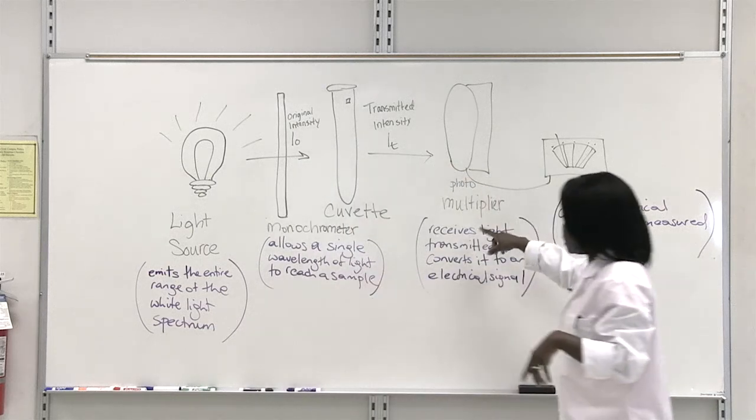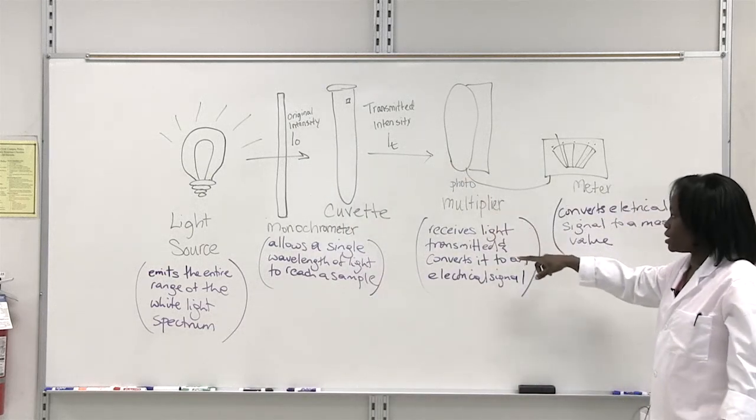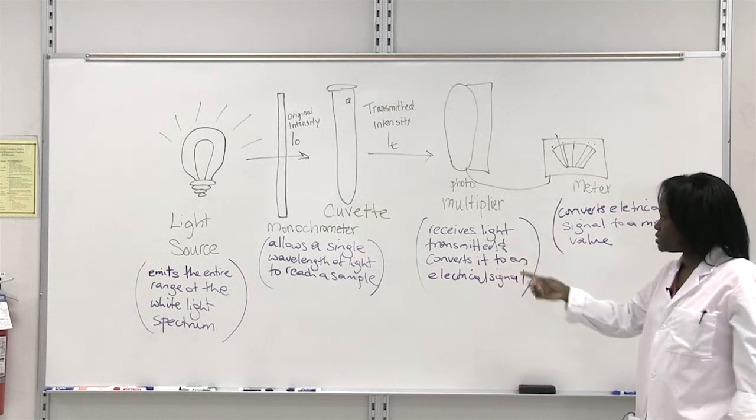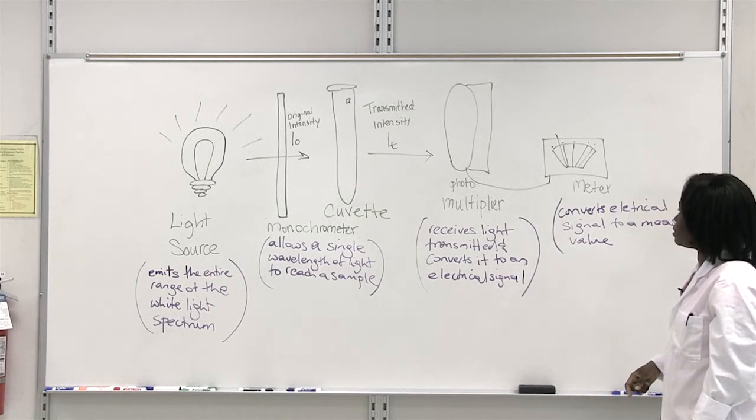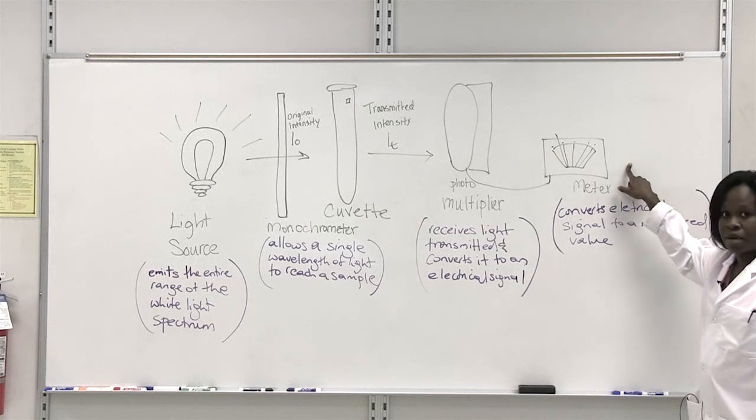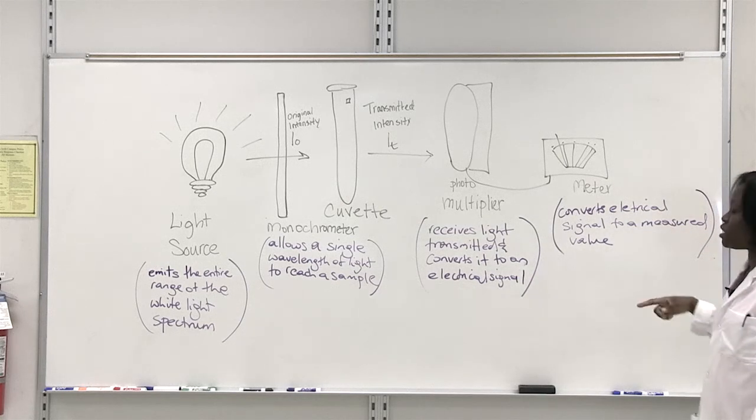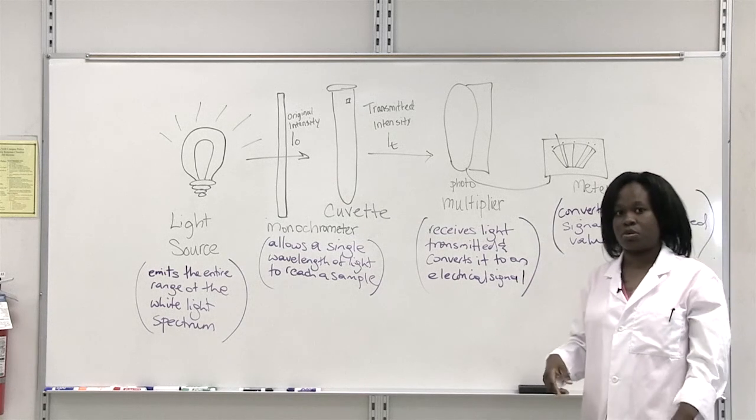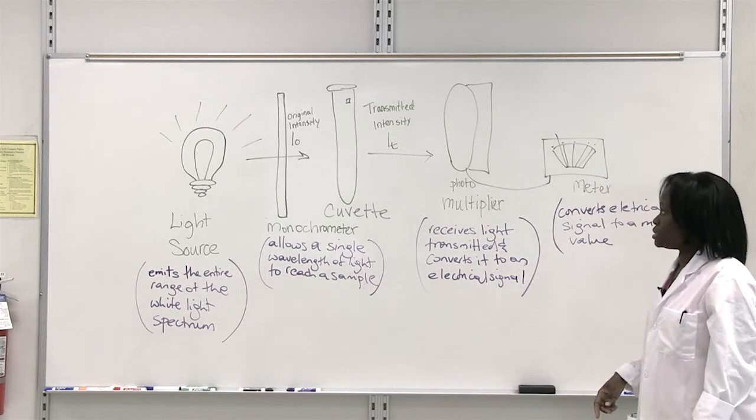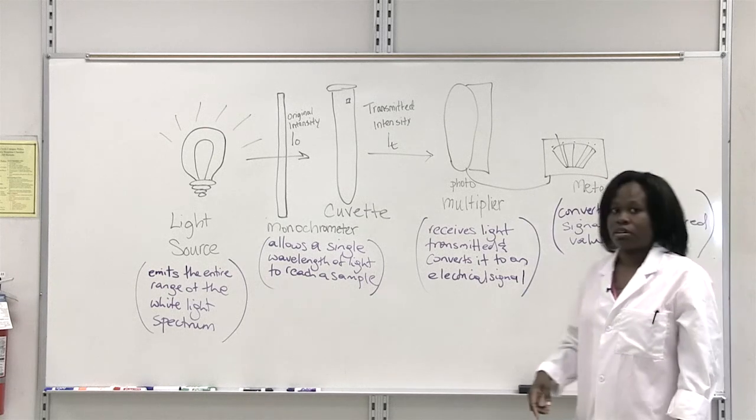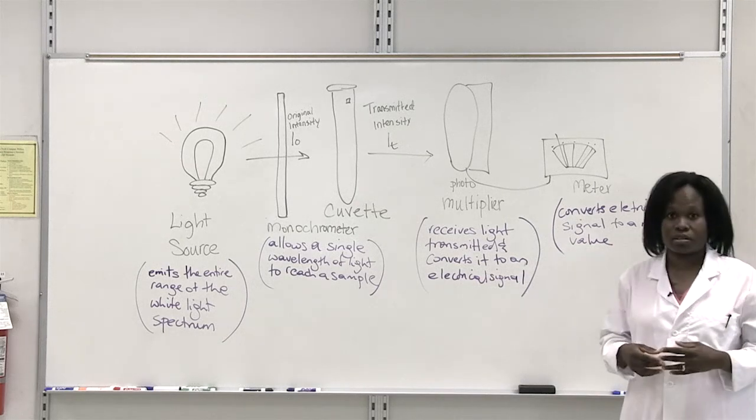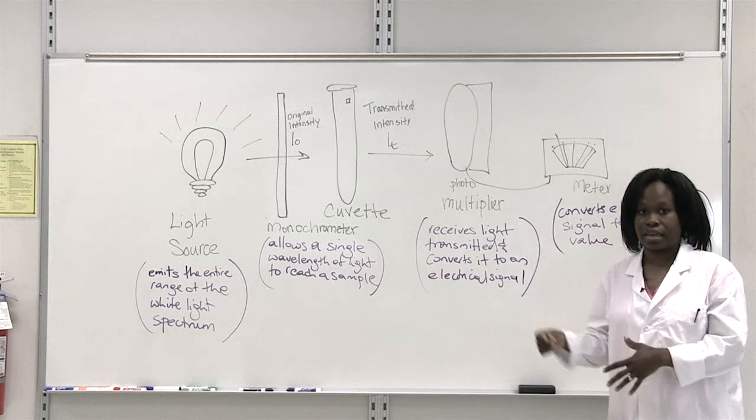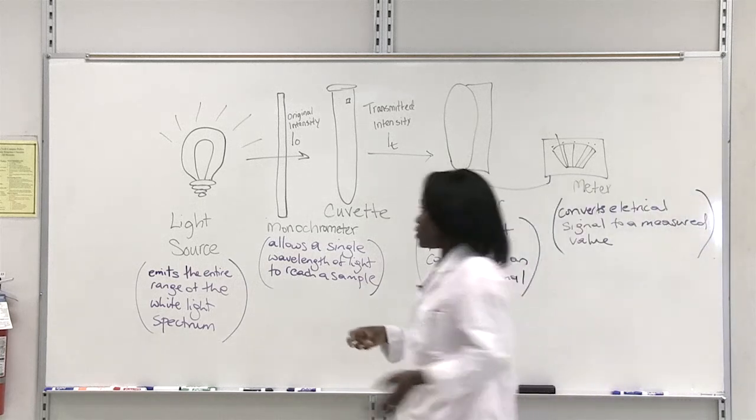Now this transmitted intensity is going to be received by this photomultiplier. And what it does is receives light and converts it to an electronic or electrical signal which is going to be picked up by a meter which will convert this electrical signal into a measured value. So that is how you can obtain your percentage transmission and from that you can determine the absorbance of your dye at a particular wavelength.